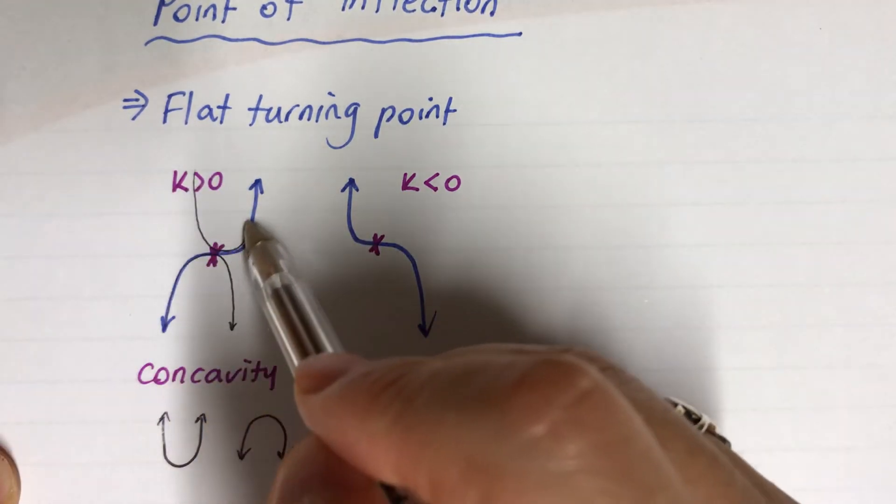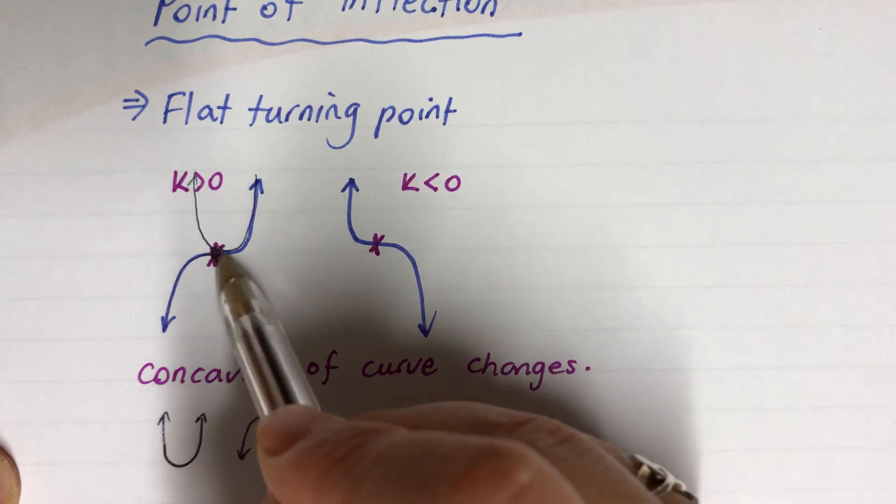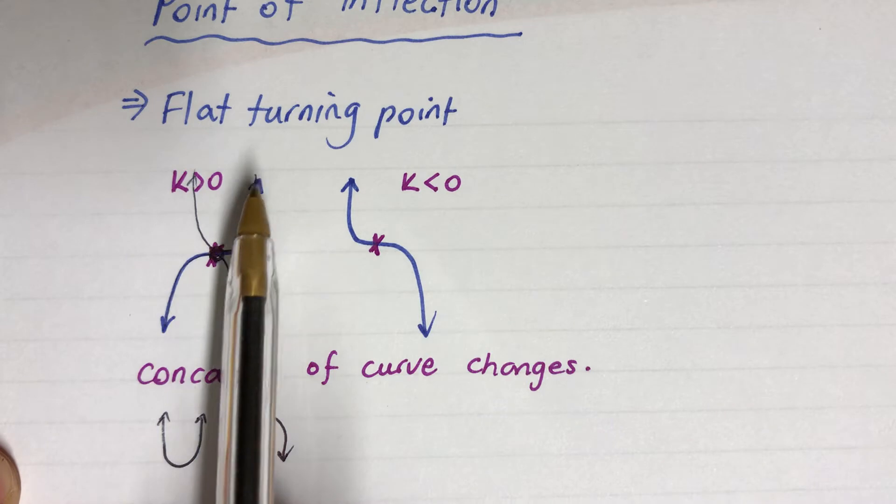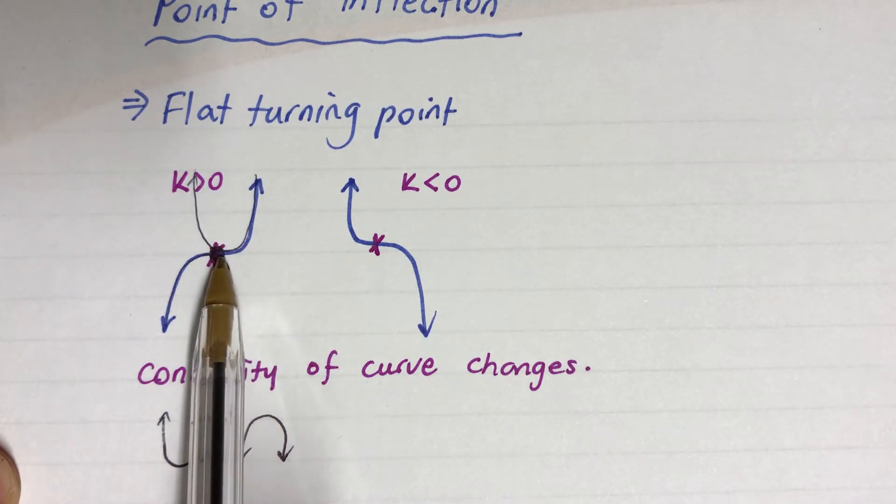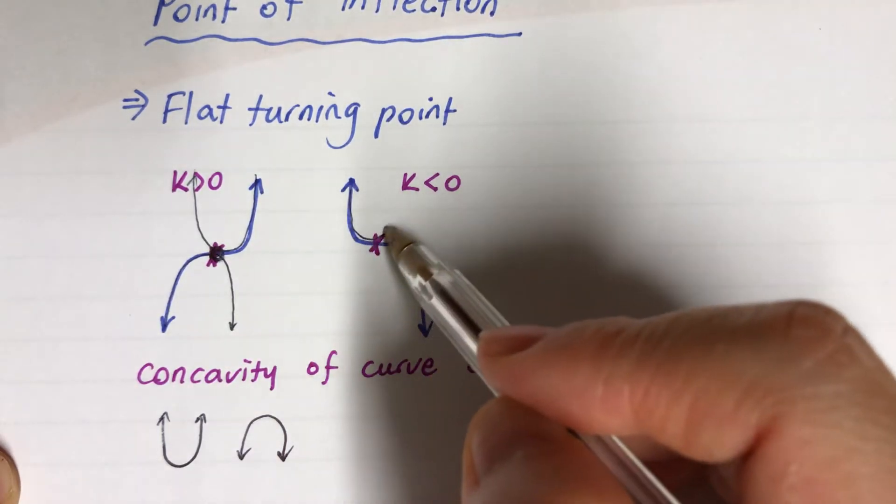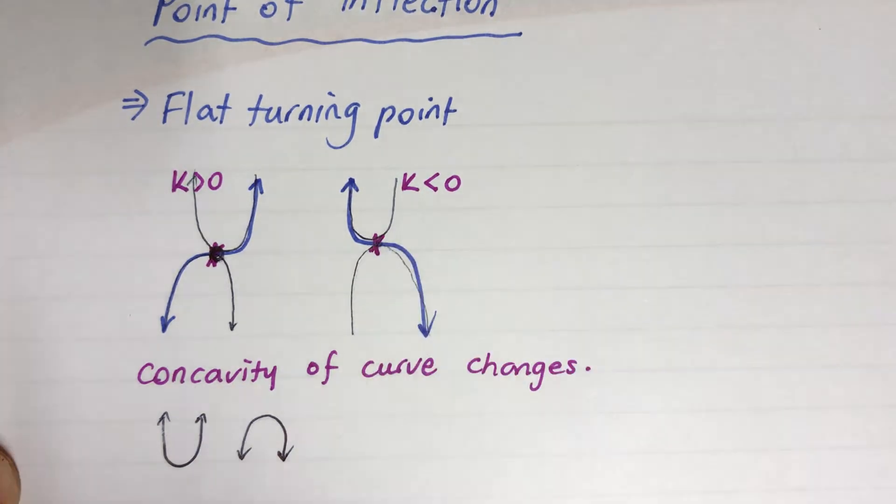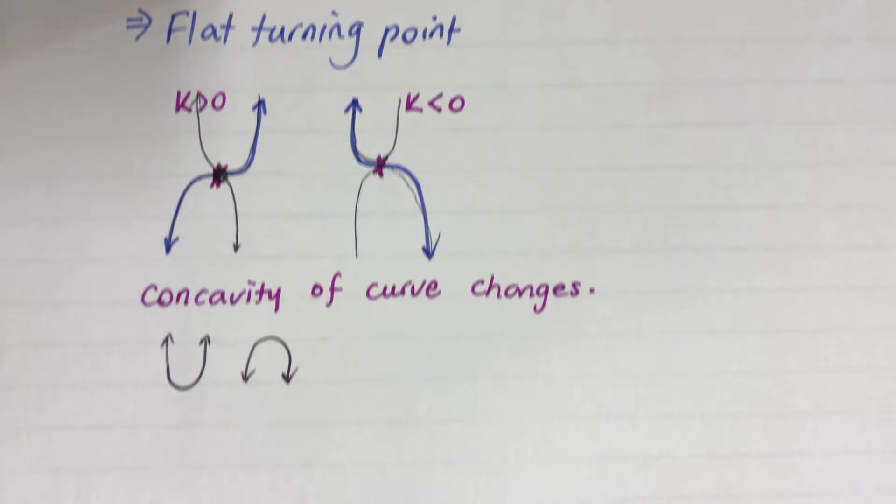When the concave up and concave down changes in between, that's a point of inflection happening. Here it's concave up and this is concave down, and in between that's the point of inflection. That's what it means by concavity of curve changes. I'm going to do the examples now.